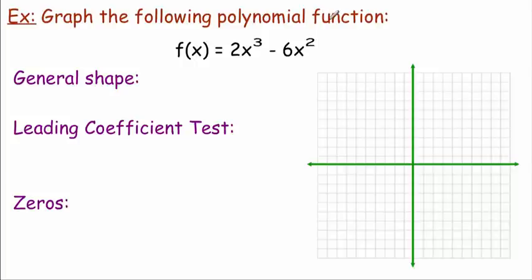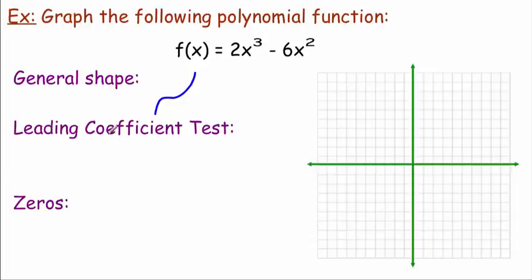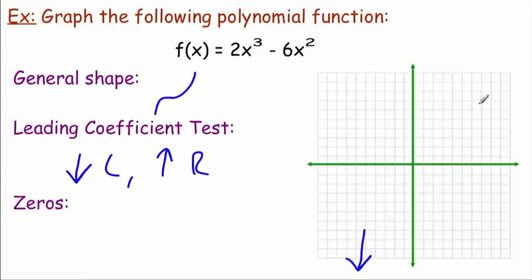In the next examples we're going to combine the ideas from the last two videos — looking at shape and the leading coefficient test, as well as finding zeros, to help us sketch polynomial function graphs. We've got f(x) = 2x³ - 6x². The highest power is x cubed, so this is going to look like a cubic graph. The leading coefficient is positive, so this graph falls to the left and rises to the right.